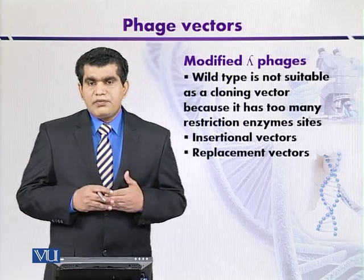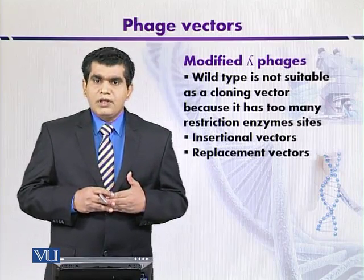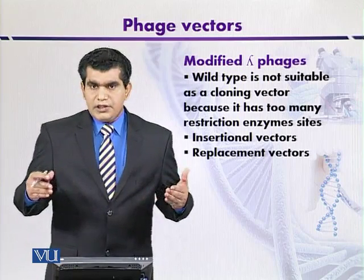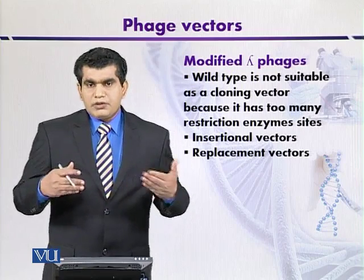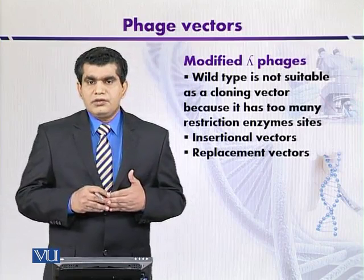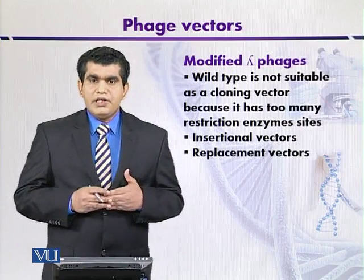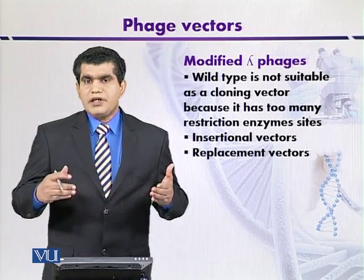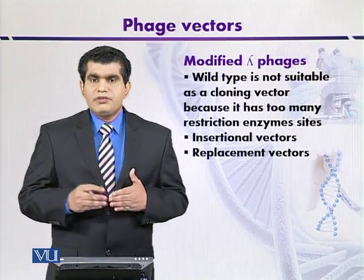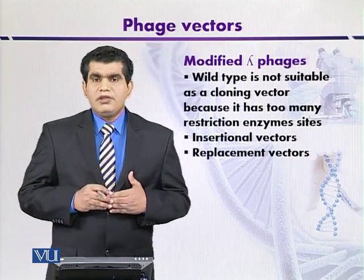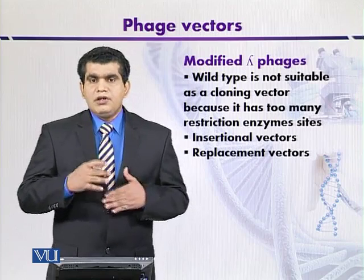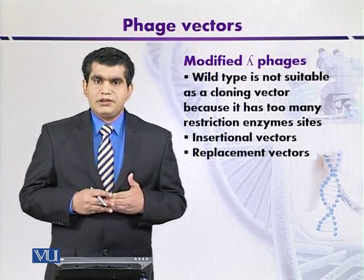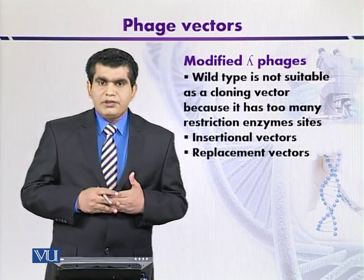In addition to that, modified lambda phages also contain an extra reporter gene called beta-galactosidase. The production of beta-galactosidase after the insertion of foreign DNA indicates whether the foreign DNA has been inserted or not. For example, if the beta-galactosidase expression is lost because of the insertion of foreign DNA within this gene, then this indicates that transformants have been produced.